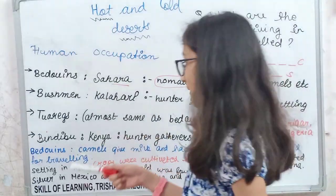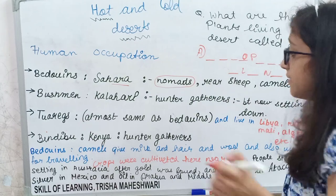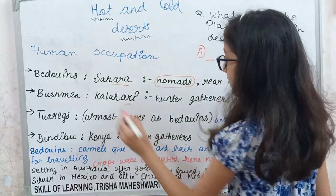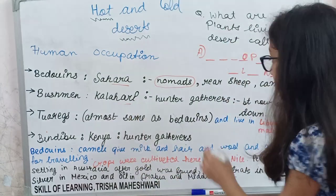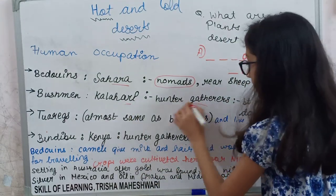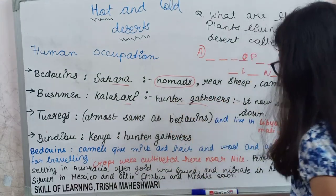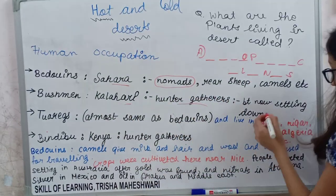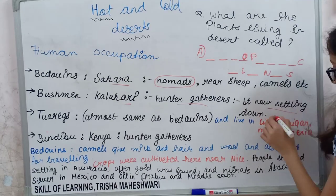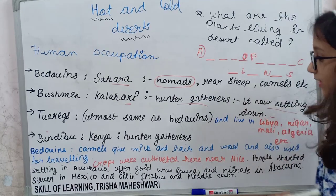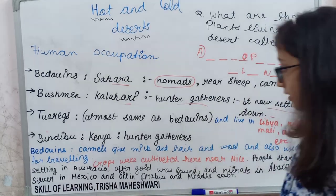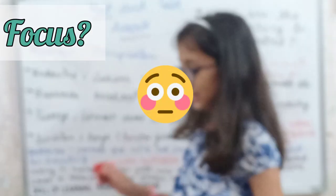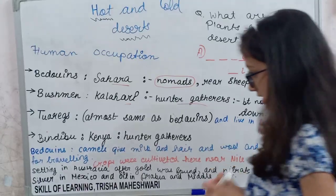Bushmen live in the Kalahari Desert. They are hunter-gatherers, but now they are settling down. They were first hunter-gatherers, but now they are settling down.